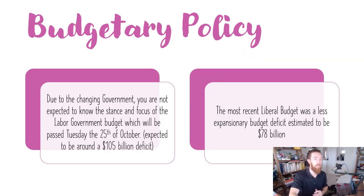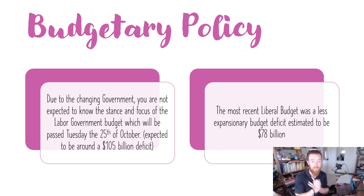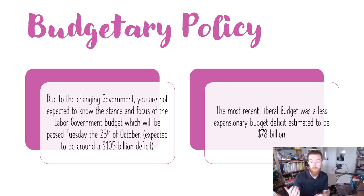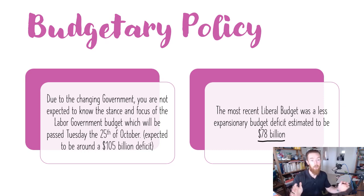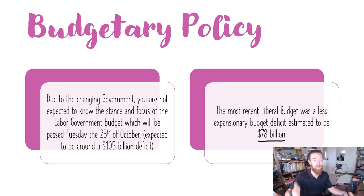Then we've got our budgetary policy. A really important thing for your exam is that due to the change in government — from Liberal to Labor — you're not expected to know the stance and focus of the Labor government budget being passed on the 25th of October. If you are interested, you are allowed to use policies from it. It's expected to be a budget deficit of around $105 billion, which is slightly larger than the most recent Liberal budget deficit of $78 billion. I recommend using the Liberal budget information at the moment because it's what you've got the most information about. Just focus on the stuff that's already been announced because it's still what is examinable.